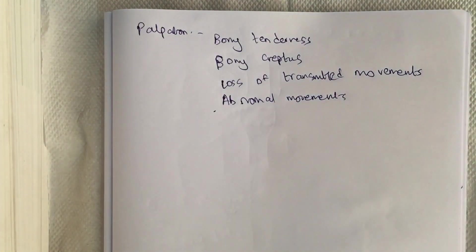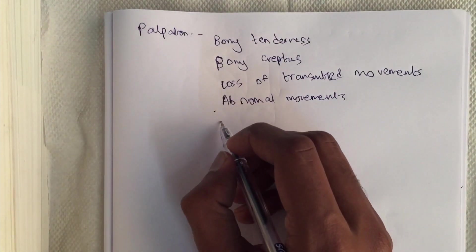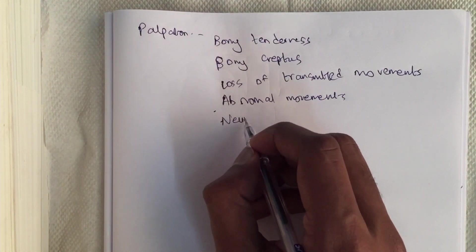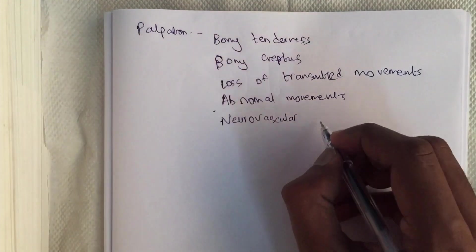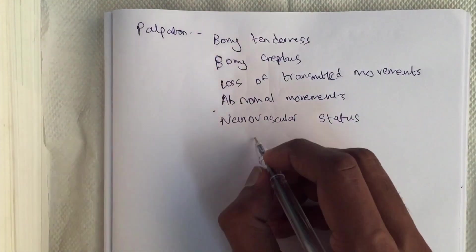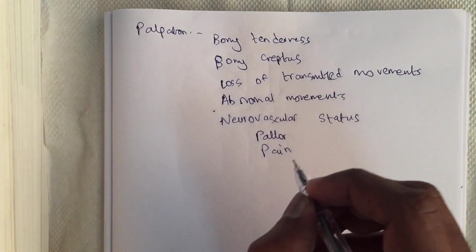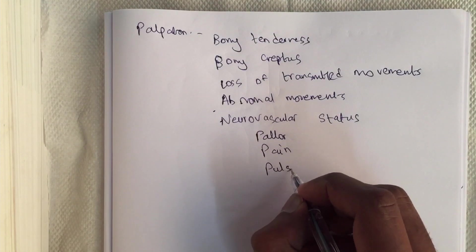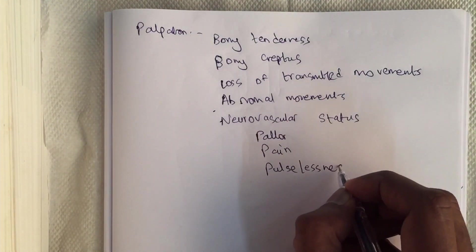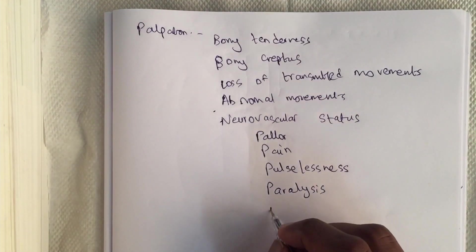Active movements is when the patient moves the limb. Passive movements is when the doctor moves the limb. We should also check for the neurovascular status. There are five P's which we should check for: pallor, pain, pulselessness, paralysis, and paresthesia.